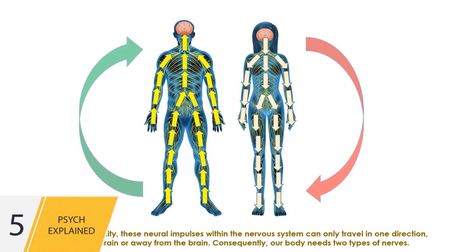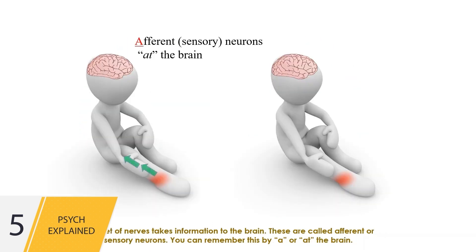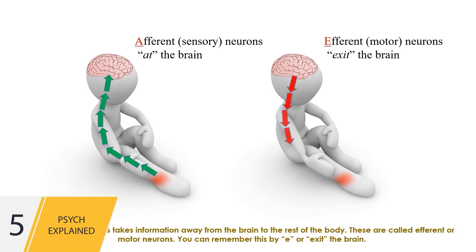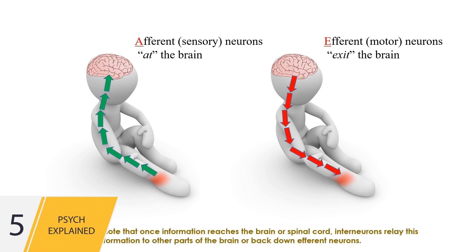Consequently, our body needs two types of nerves. One set takes information to the brain — these are called afferent or sensory neurons. You can remember this by 'A' for 'at the brain.' Another set takes information away from the brain to the rest of the body — these are called efferent or motor neurons. You can remember this by 'E' for 'exit the brain.' Once information reaches the brain or spinal cord, interneurons relay this information to other parts of the brain or back down efferent neurons.